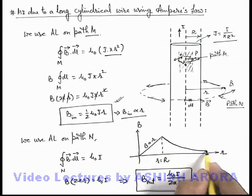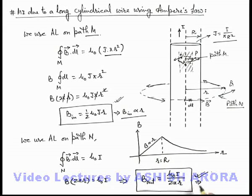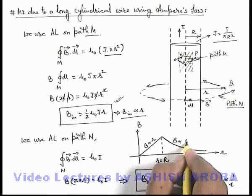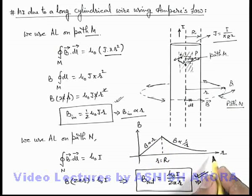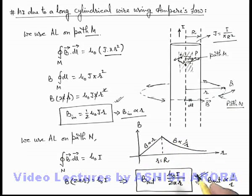And outside it will be a rectangular hyperbola because here you can see B outside is inversely proportional to r. So this will be the curve which we are getting for variation of magnetic induction with distance from the wire, so be careful about these results.